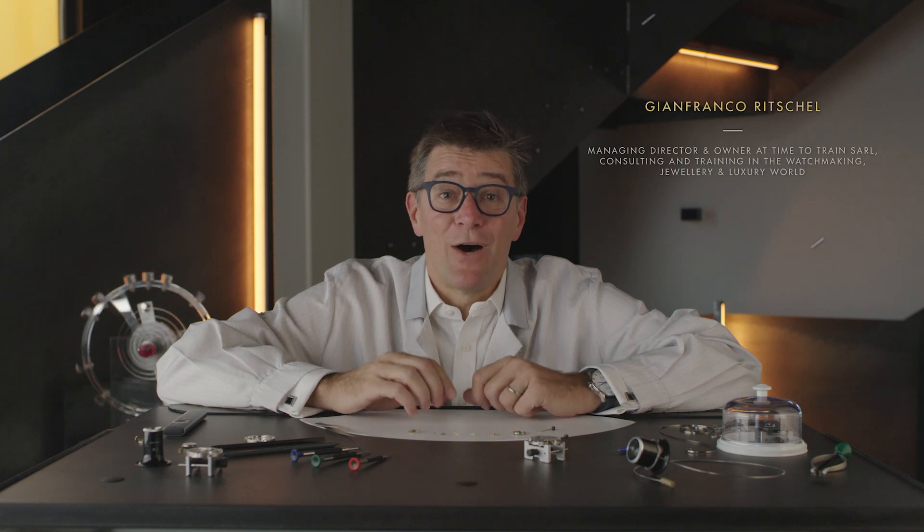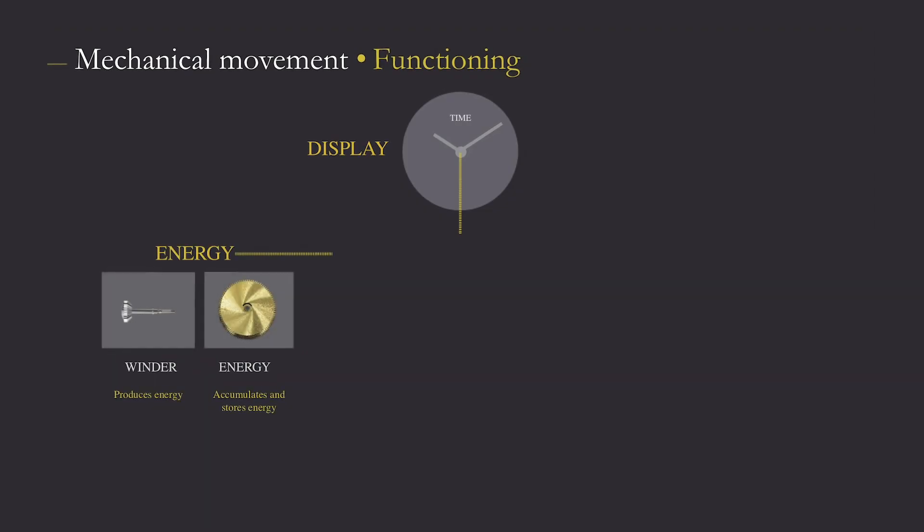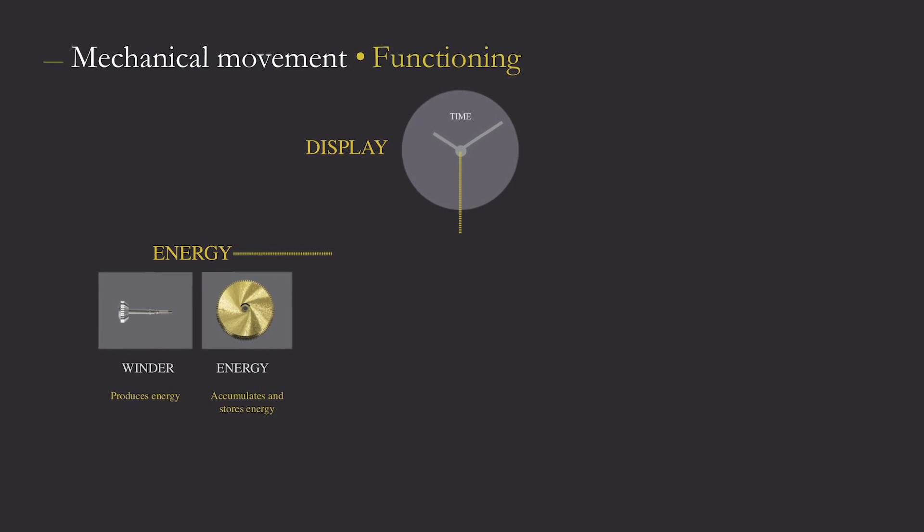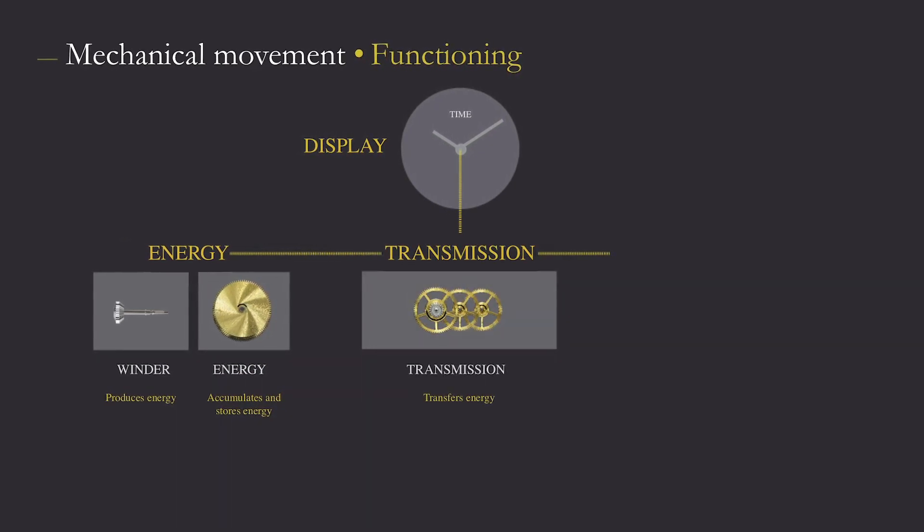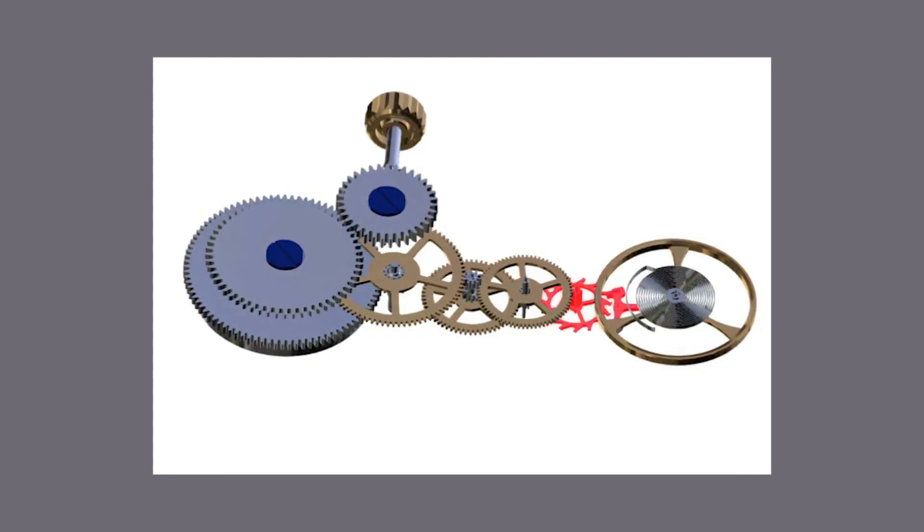Do you remember? Until now we figured out how we create the energy and how we store it. Let us now discover how we transmit the energy. The gear train transmits the energy from the barrel to the escapement through a series of wheels.